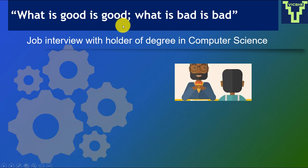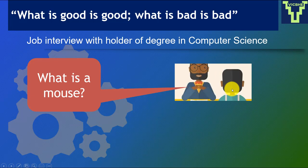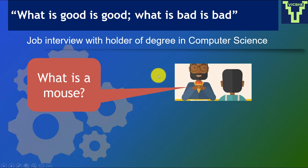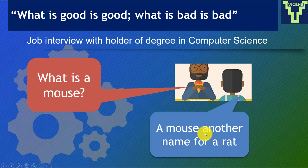Now there is something fundamental: what is good is good, and what is bad is bad. At a job interview, a gentleman with a BSc in Computer Science was asked, 'What is a mouse?' This is a true story from 2002. I took applications for establishing private universities to the Federal Executive Council in Nigeria, and the minister gave this as an example — he was part of an interview where the BSc Computer Science graduate said a mouse is another name for a rat.